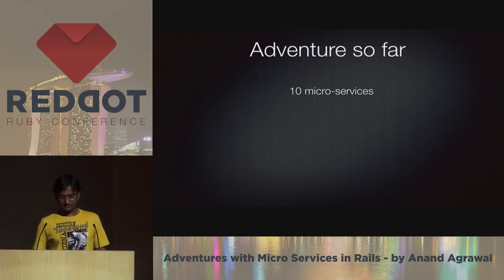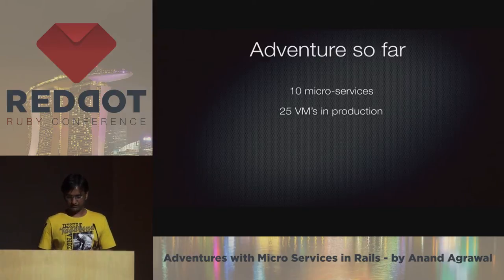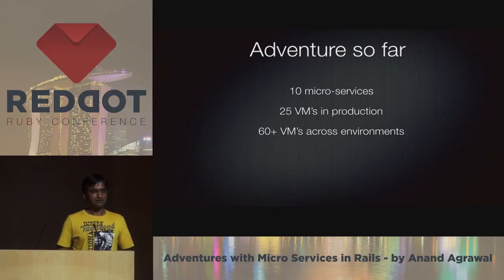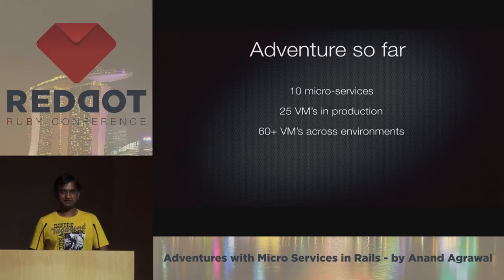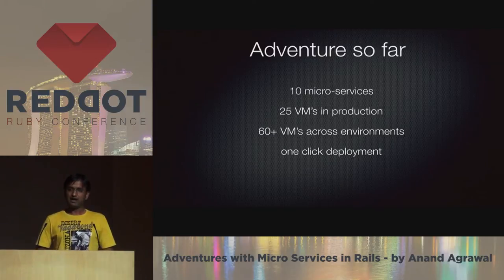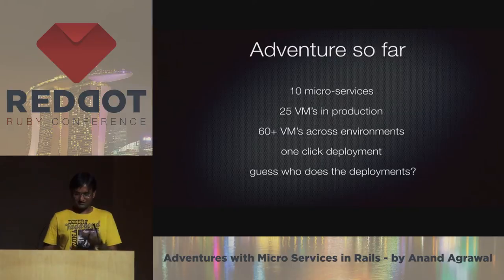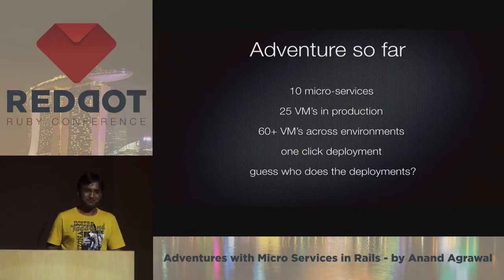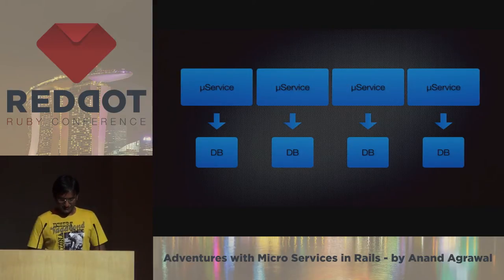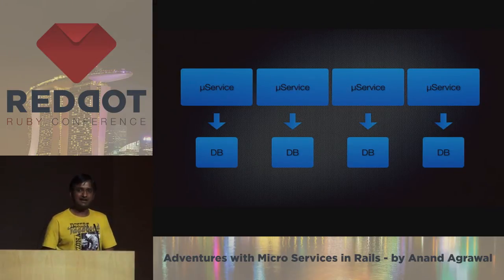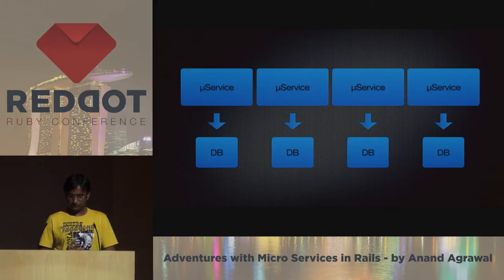What we have achieved so far is 10 microservices doing a bunch of things, 25 VMs in production, 60-plus VMs across other environments like QA, test, and performance. We achieved one-click deployments across all these environments. If it's one-click deployment, who does the deployment? Product owners, QAs — anybody. There's an interesting story that somebody at the client side wanted a dog to do the deployment. Each of these 10 microservices was self-contained — they had their own DB, their own contracts, running in their own process, talking to each other through HTTP.